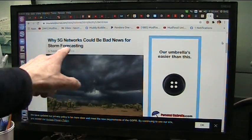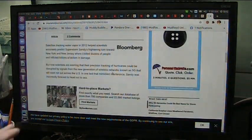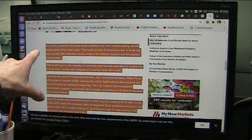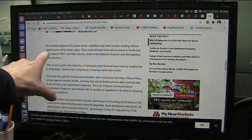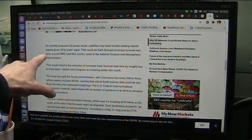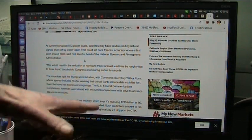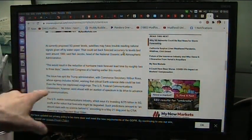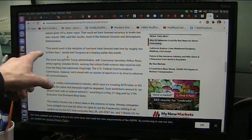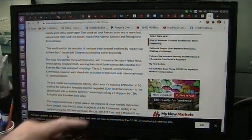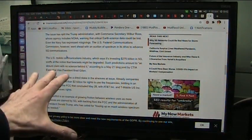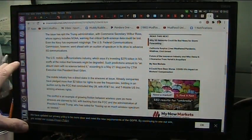They're even talking about changes in how they can forecast for the weather because they're going to be adding so much moisture into the zones that they use. At currently proposed 5G power levels, satellites may have trouble reading natural signals given off by water vapor. It could set back forecasting to levels last seen around the 1980s. It would result in reduction of hurricane tracking by roughly two to three days. They have no idea they're going to be creating water vapor on the Earth.